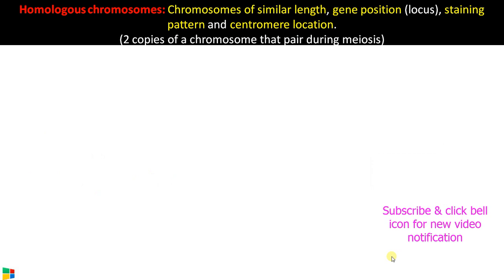Homologous chromosomes are chromosomes of similar length, gene position, staining pattern, and centromere location. Homologous chromosomes are the chromosomes that pair during meiosis.